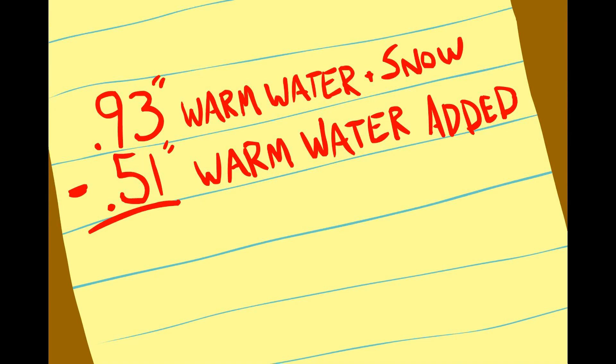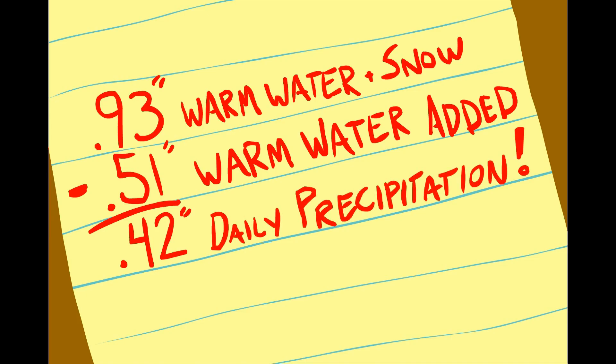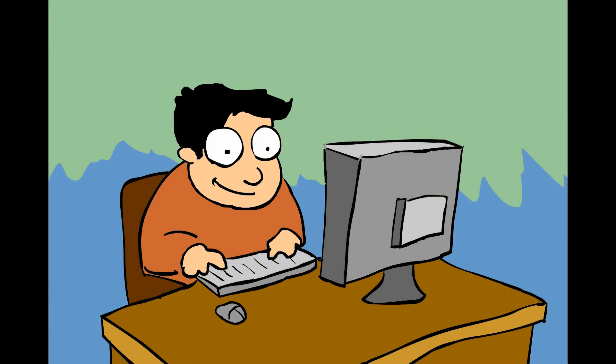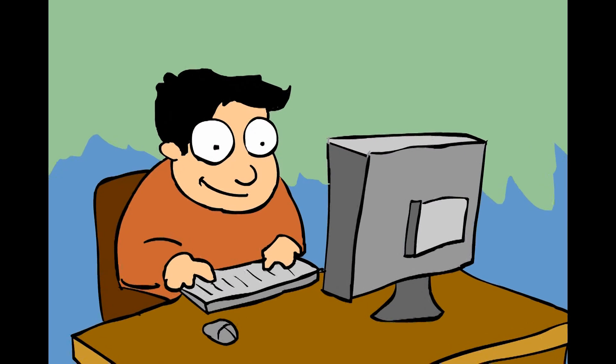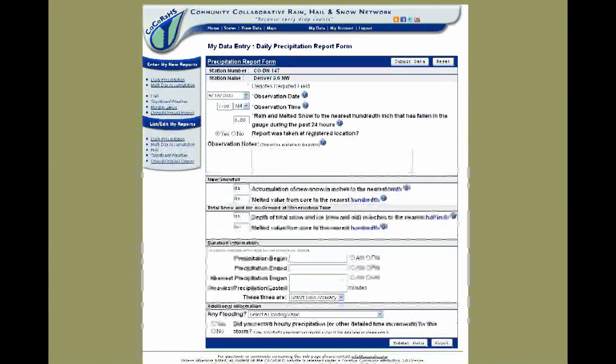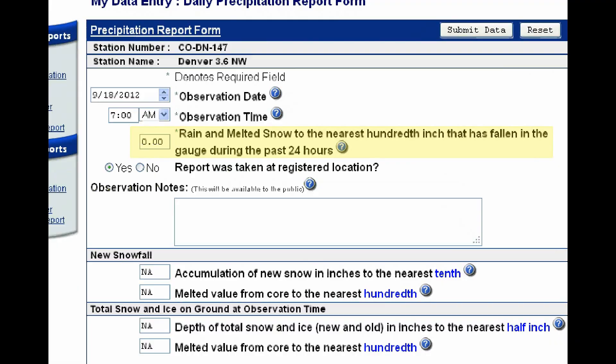Now, simply subtract the warm water that you added from the measurement you just took, and you will have your daily precipitation measurement. Add that measurement into your daily precipitation report in the field that says, rain and melted snow to the nearest hundredth inch that has fallen in the gauge in the last 24 hours.